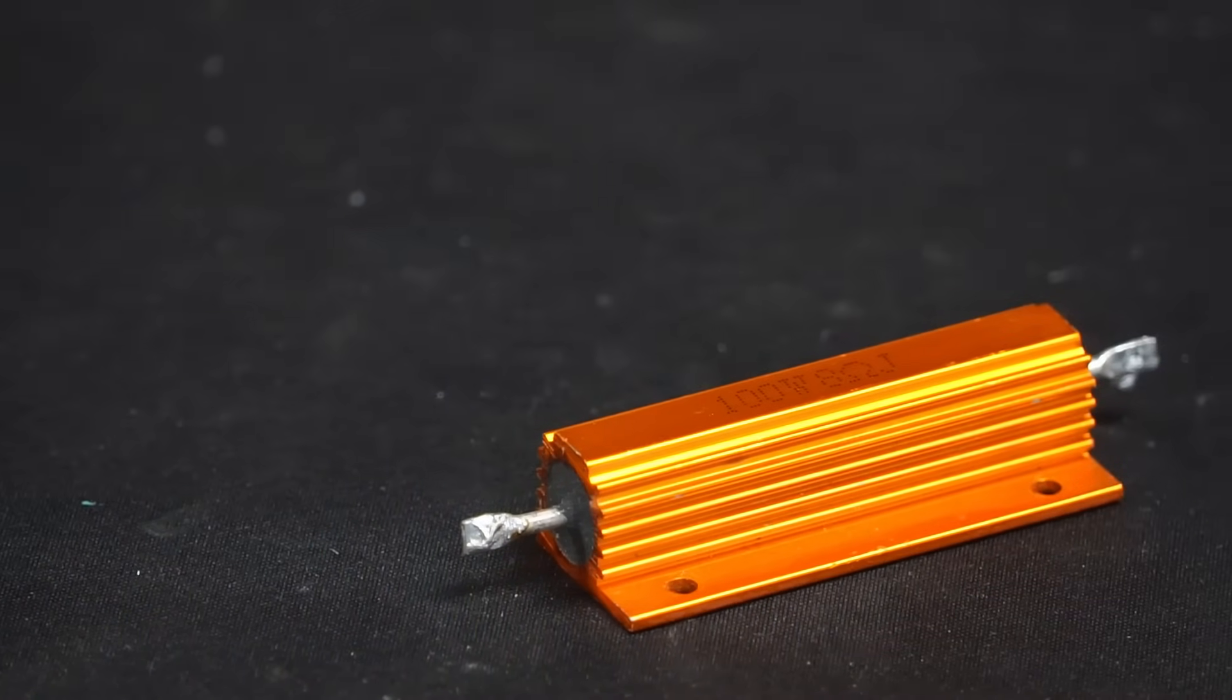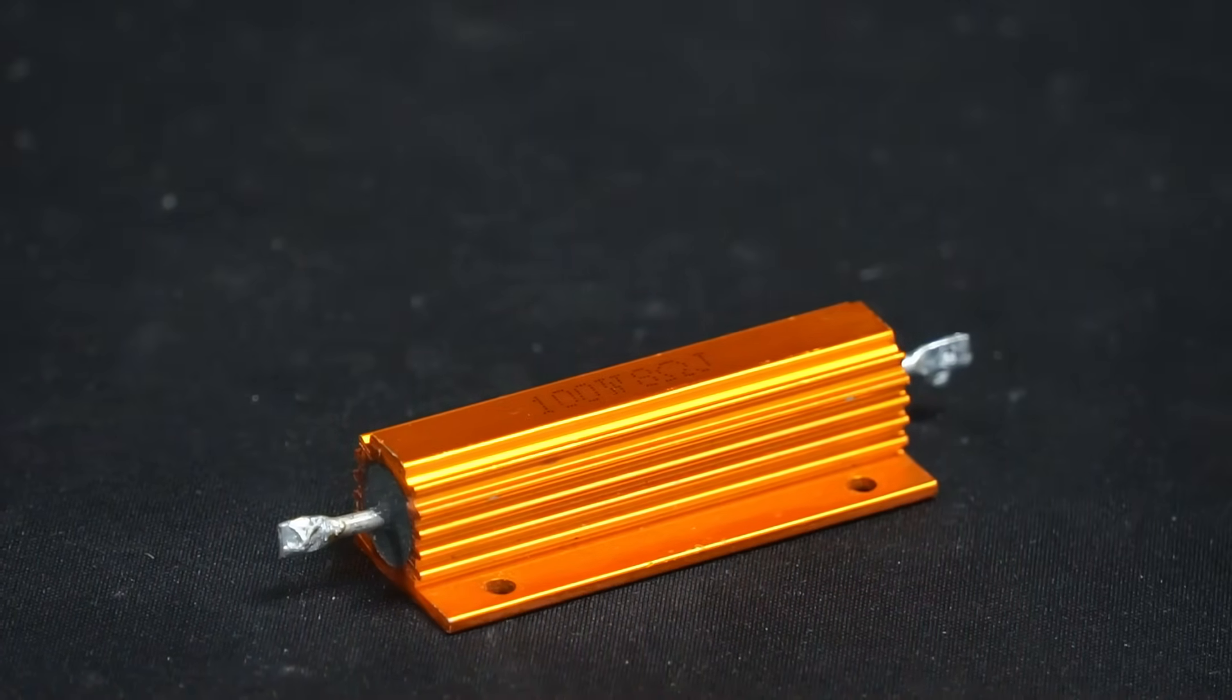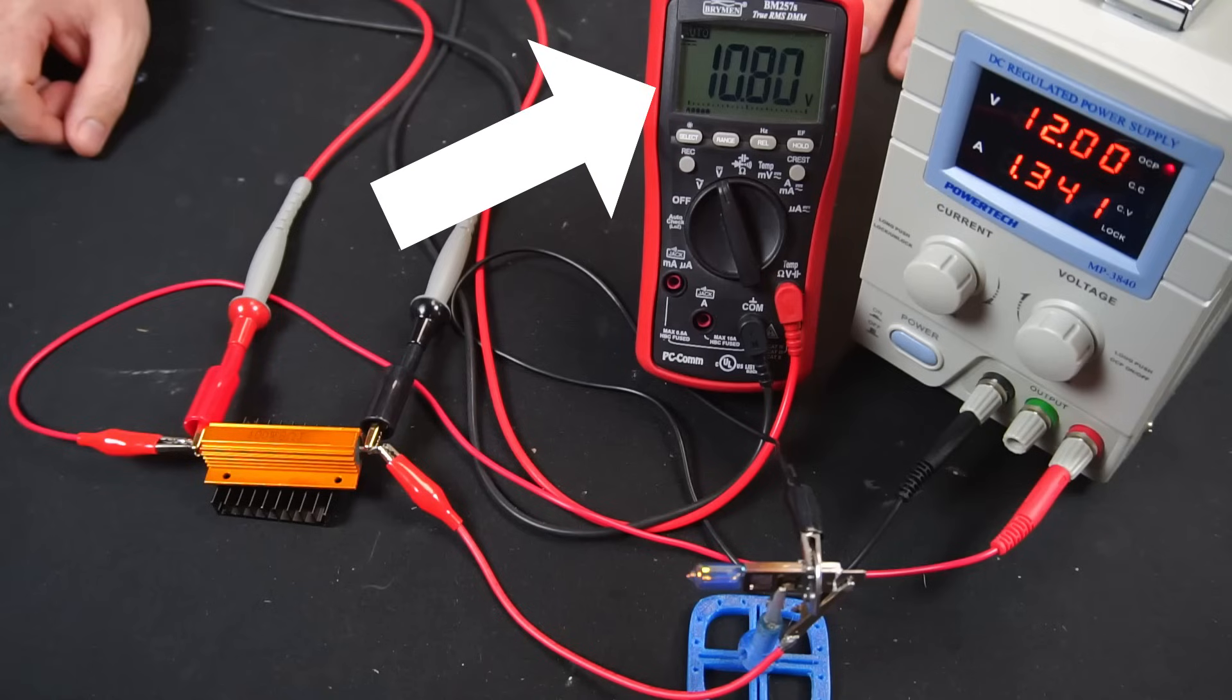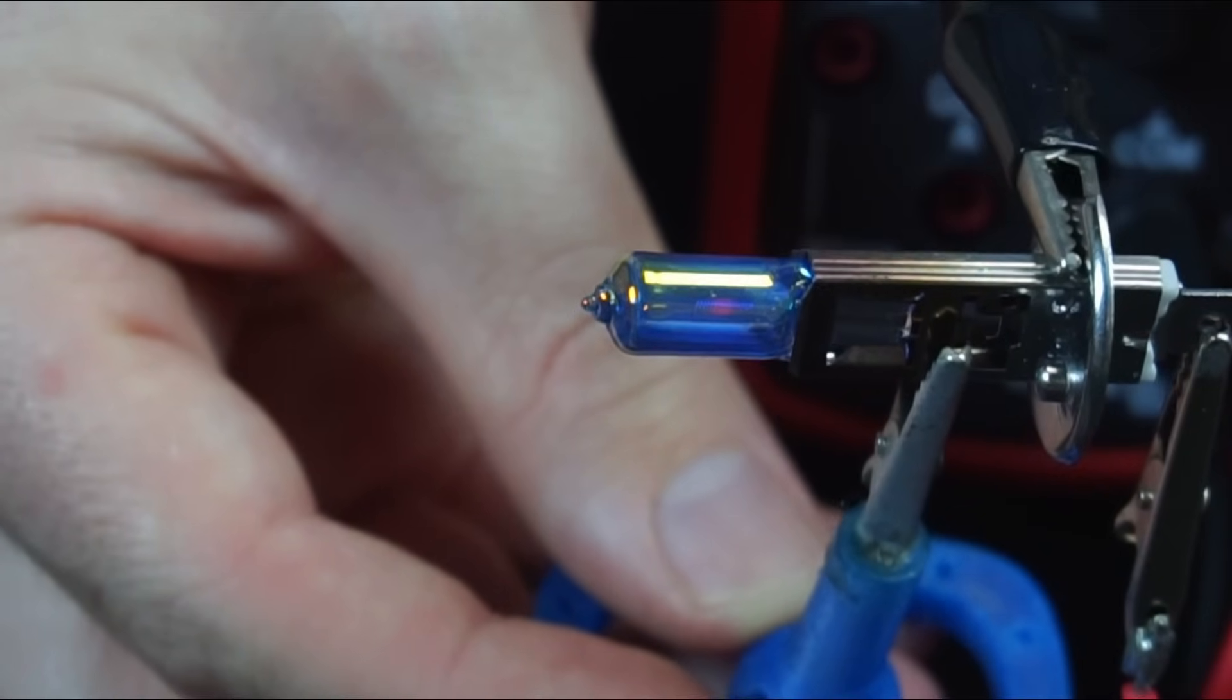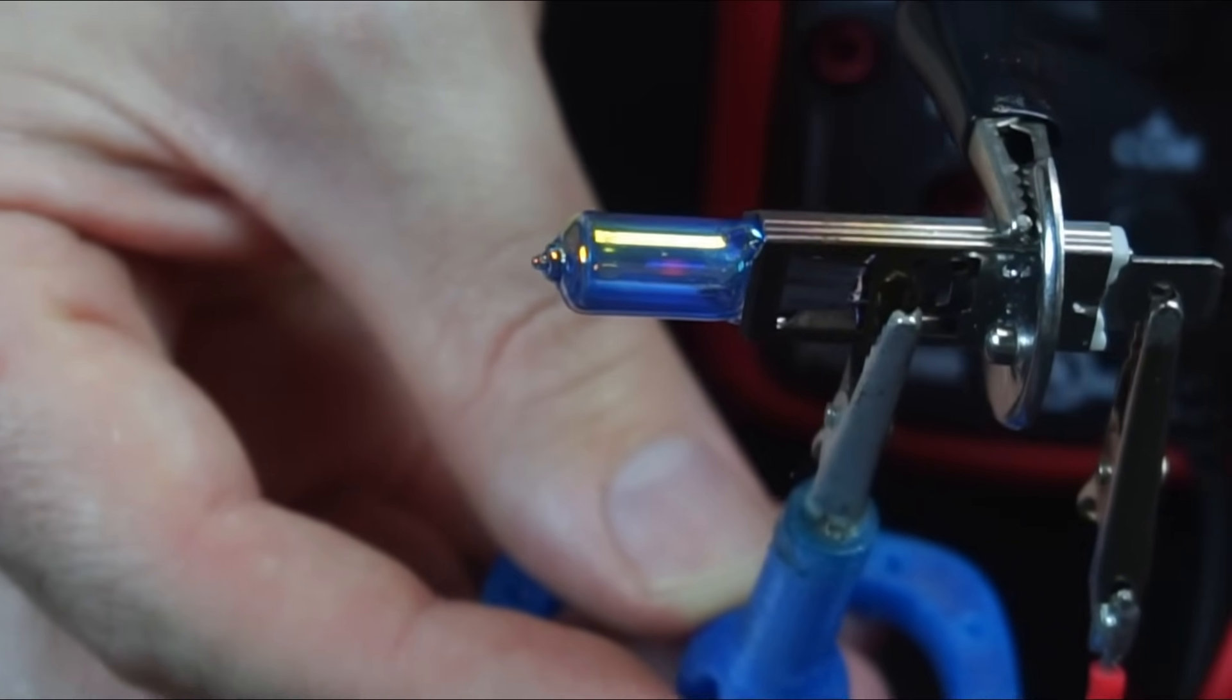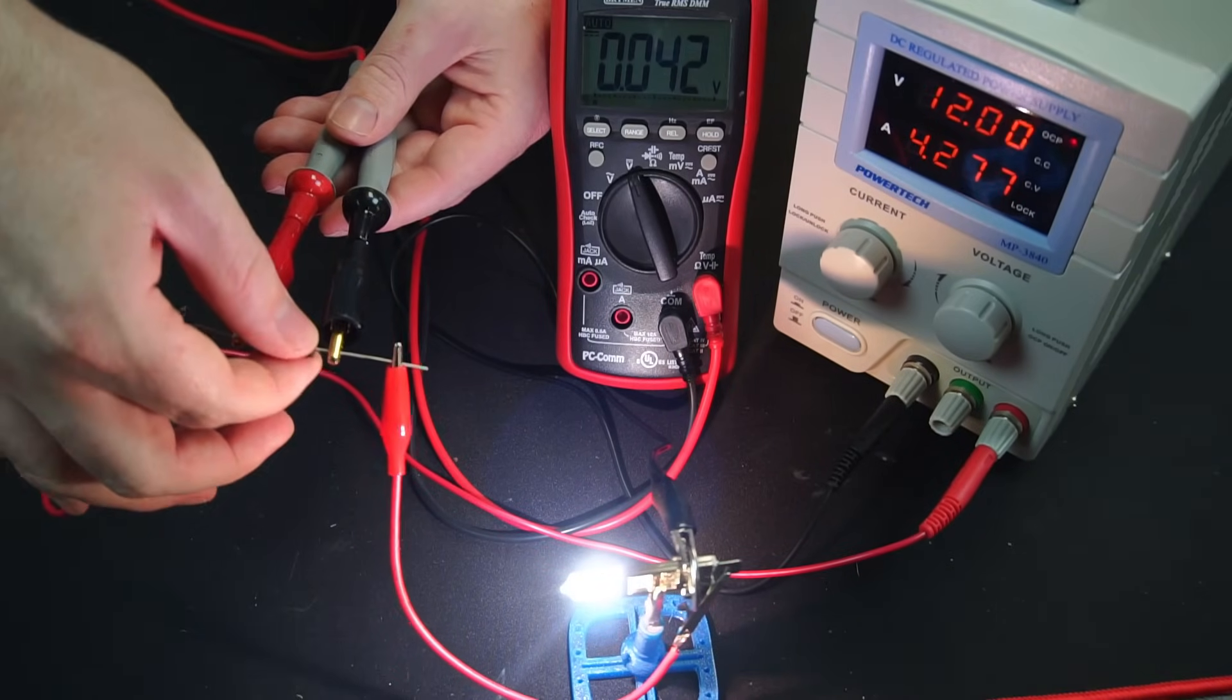So what's going on here? Well, the issue is the 8 ohm resistor has too much resistance to allow the circuit to function as normal. There is a 10 point volt drop across the resistor. If we do the math, that is more than 14 watts of power being wasted as heat. That leaves less than 1.5 volts to power the bulb, so that's why it's barely glowing.